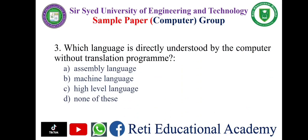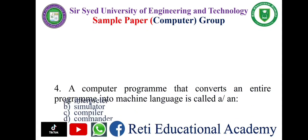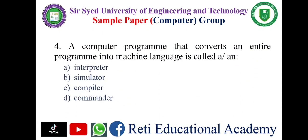Question number three: Which language is directly understood by the computer without a translation program? A. Assembly language, B. Machine language, C. High-level language, D. None of these. The correct answer is B: machine language. Question number four: A computer program that converts an entire program into machine language is called — A. Interpreter, B. Simulator, C. Compiler, D. Commander. The correct answer is C: compiler.